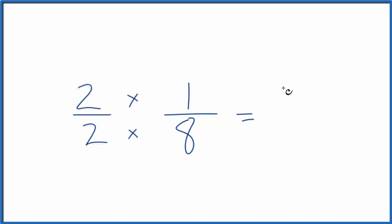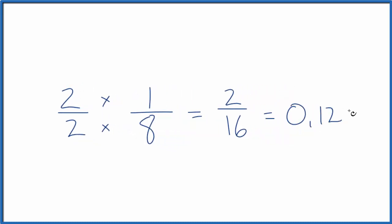But now, two times one is two, two times eight is sixteen, and this is an equivalent fraction. One-eighth and two-sixteenths, they're equal to the same decimal value: zero point one two five.